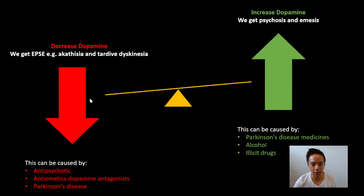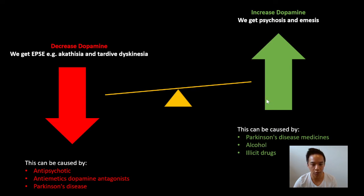With this seesaw action, we can use one end to treat the other. So for Parkinson's disease, where there's a drop in dopamine, we treat it with Parkinson's disease medicines. Similarly, if you've had too much alcohol and feel nauseous, we can treat that with an anti-nausea dopamine antagonist. And if illicit drugs put someone into psychosis, we can treat that with antipsychotic medicines.